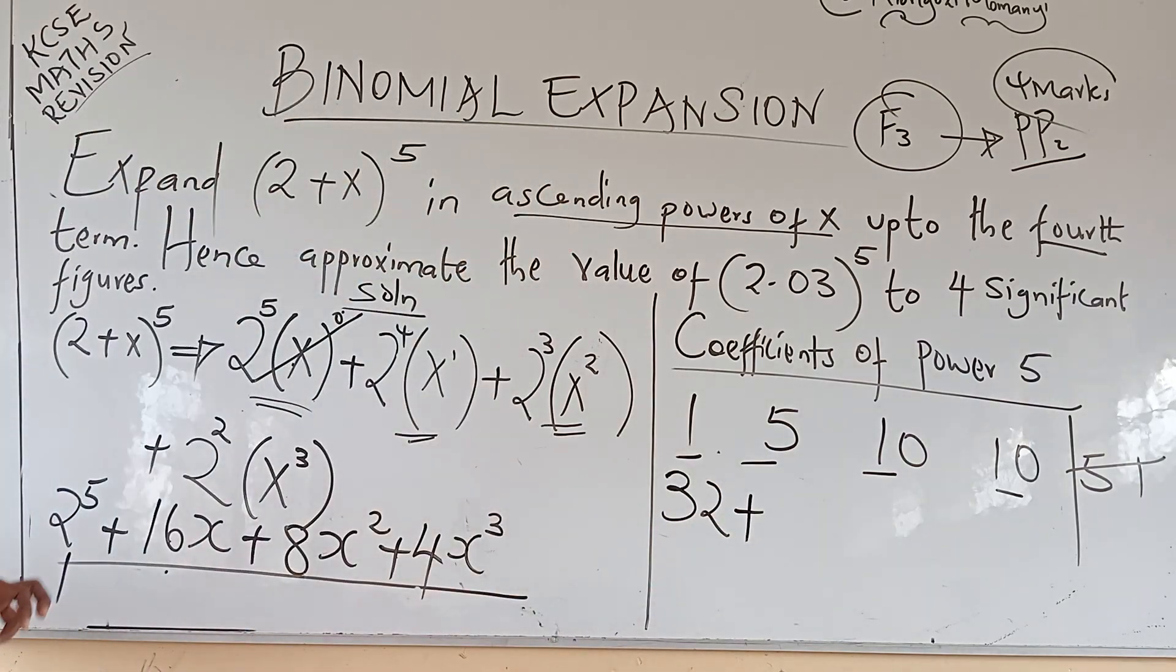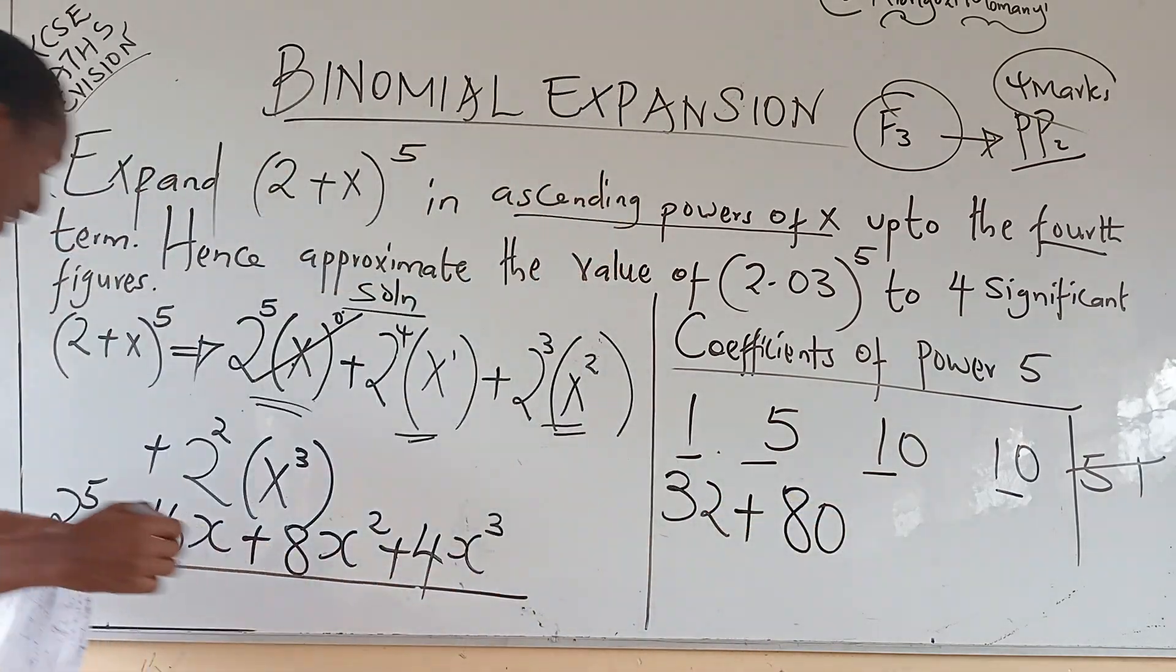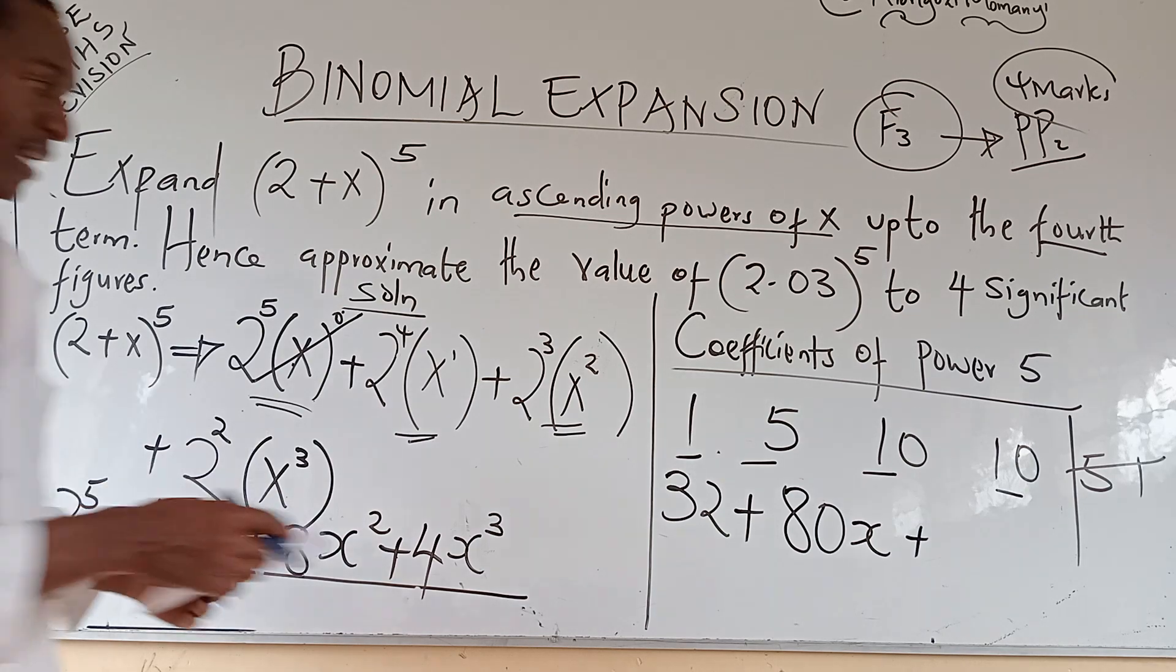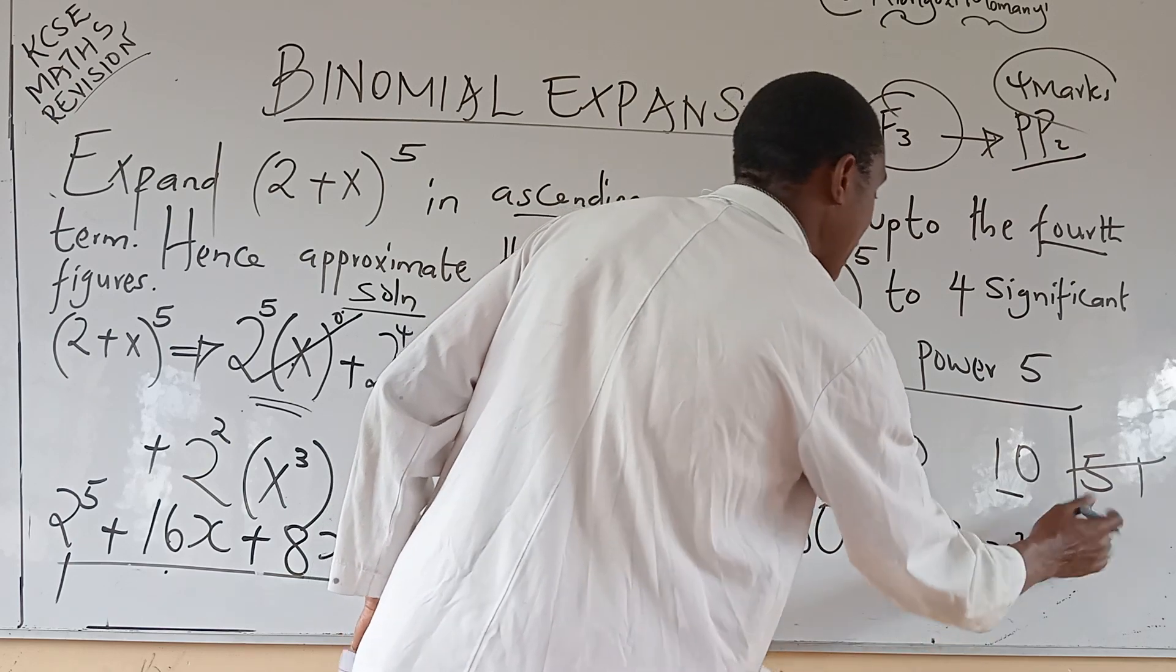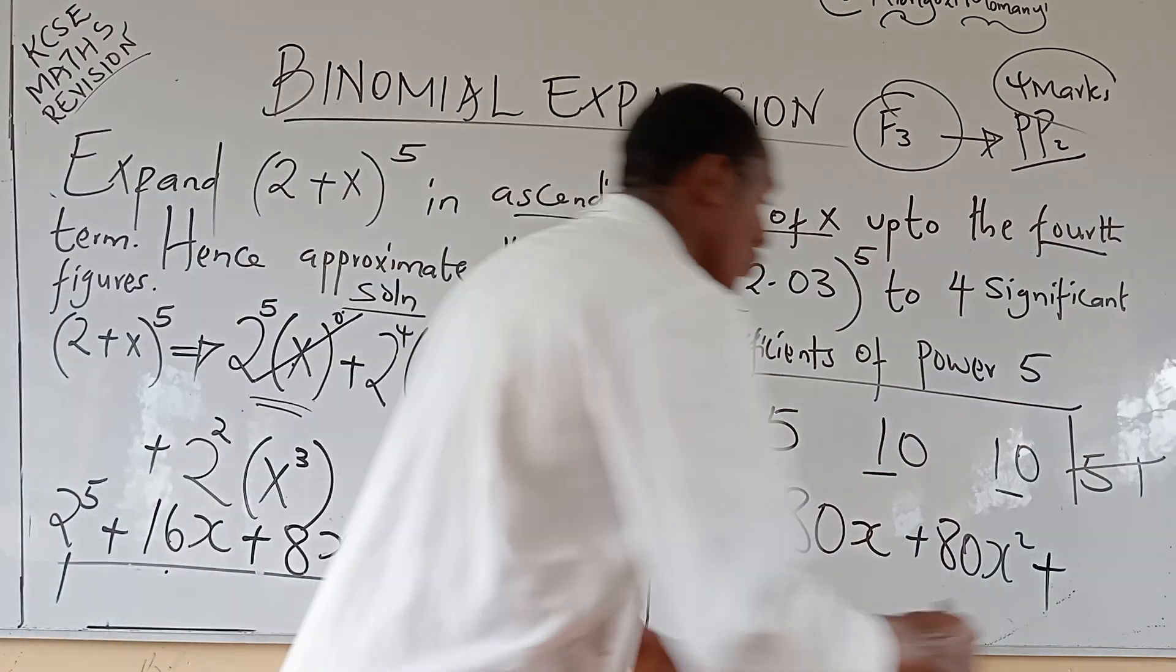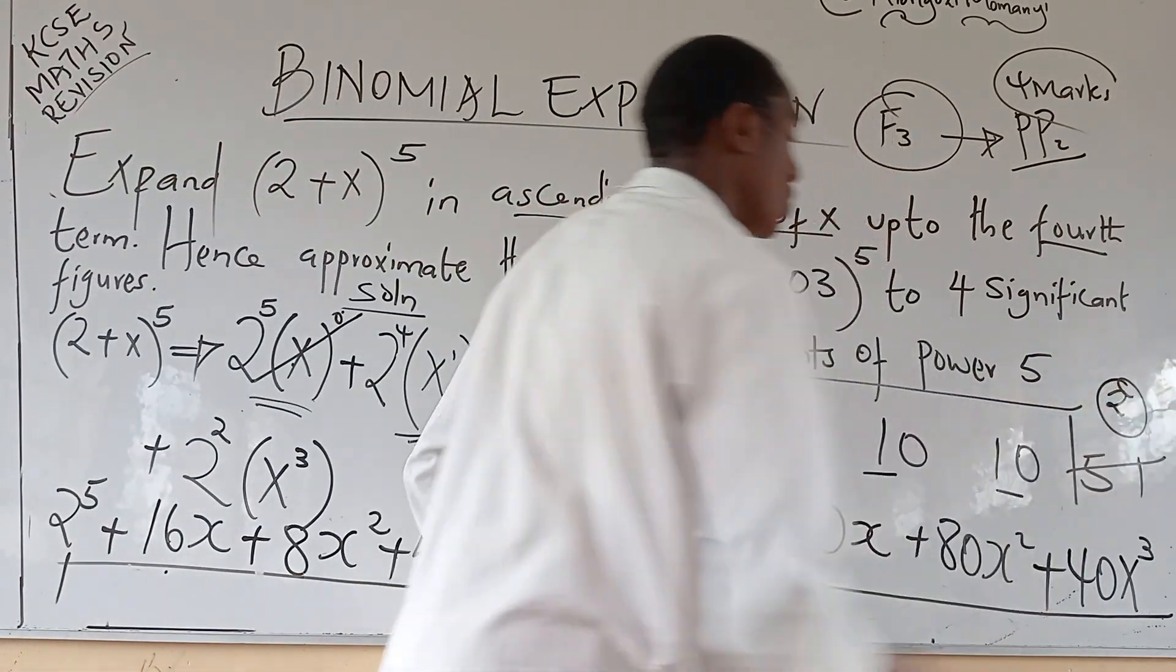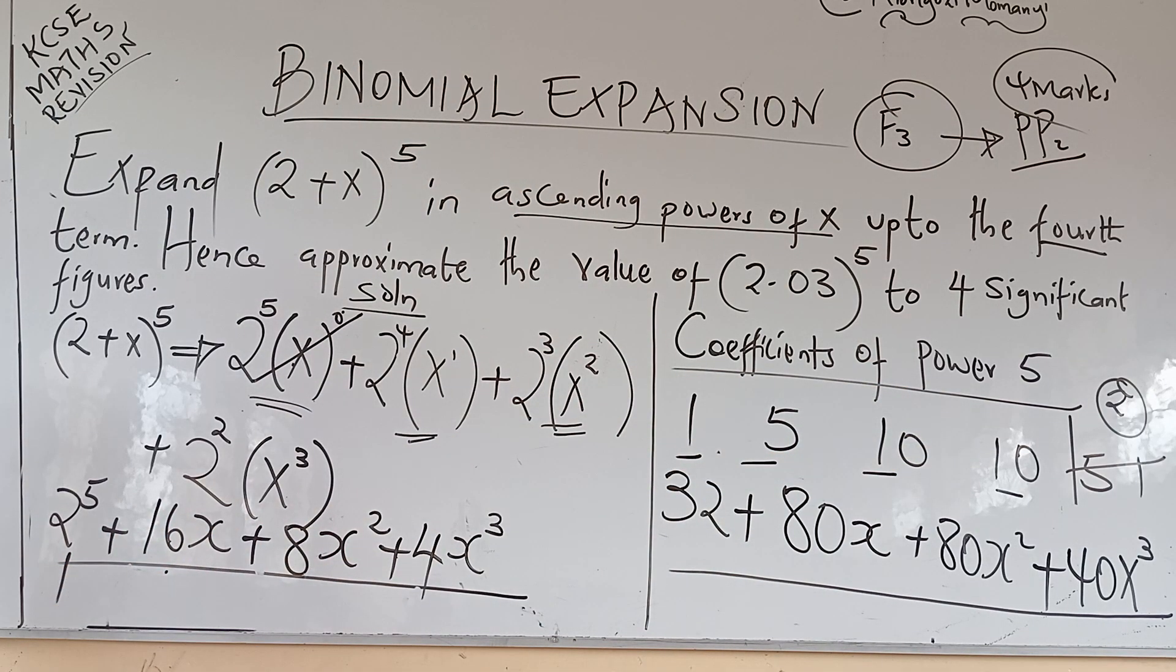Plus 16 times 5 is 80, so 80x. Plus, there is 8x^2. That is 8 times 10, so 80x^2. And then the last one, the fourth term, is 4 times 10, which is 40x^3. This is 2 marks, and this is the expansion. When you have used what we call the coefficients multiplied by corresponding values in that binomial expansion.